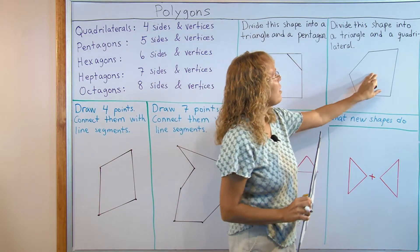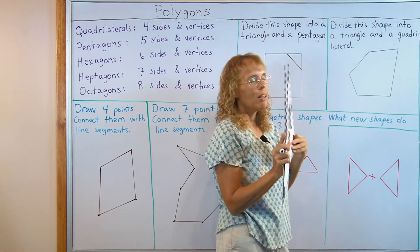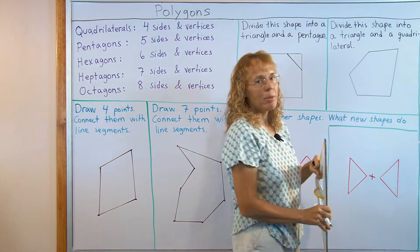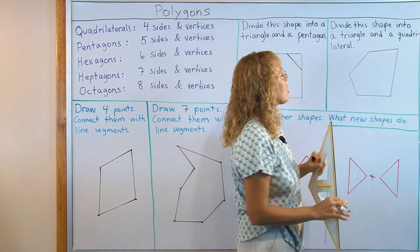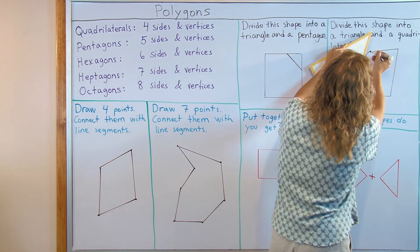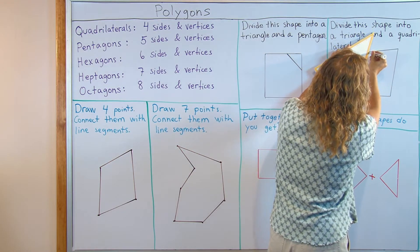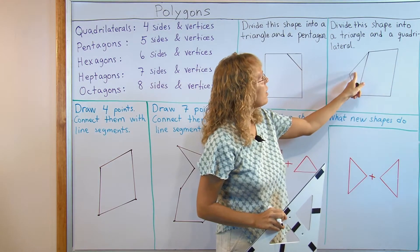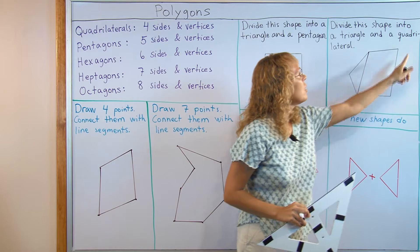Divide this shape into a triangle and a quadrilateral using just one line, and again it might take some thinking and experimenting and there might be several solutions but I'll show you one solution that I found is here. It's the triangle and here's the quadrilateral, four vertices.